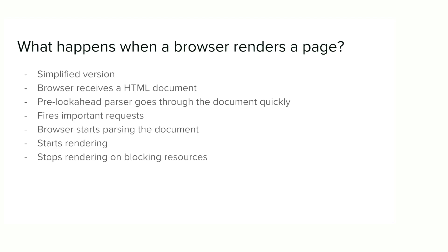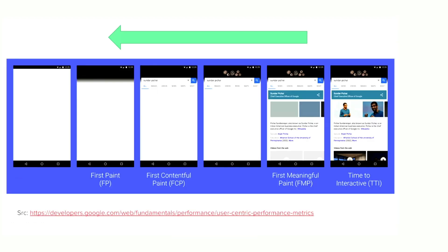The browser fires those requests immediately before going through the whole document. When it starts the rendering phase, it goes through the HTML document from top to bottom, but it has to stop every time there is a blocking request — for fonts, CSS, or JavaScript that is not async. It has to connect to that address, wait for the response, parse and execute it if it's JavaScript, and then continue rendering. That's basically what slows down web page rendering when you have blocking resources.